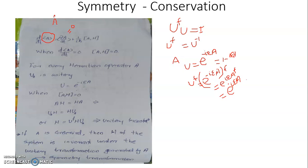Whenever there is a Hermitian operator, there is associated with it a unitary operator of the form e^{±iεA}, where ε is a small scalar quantity. If U = e^{-iεA}, then U† = e^{+iεA}, and vice versa.